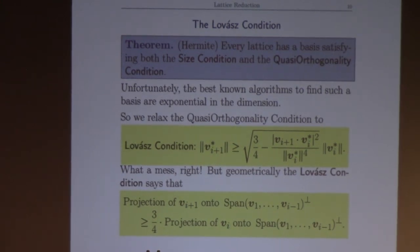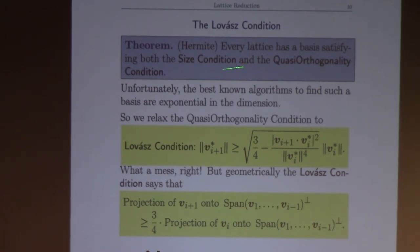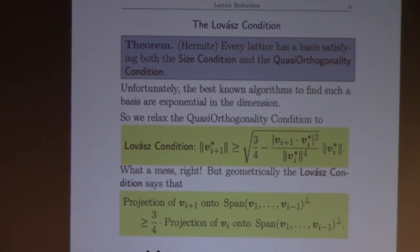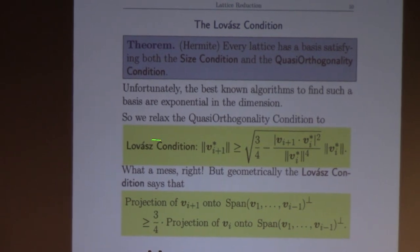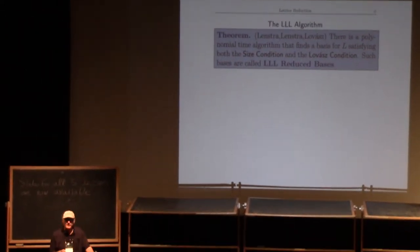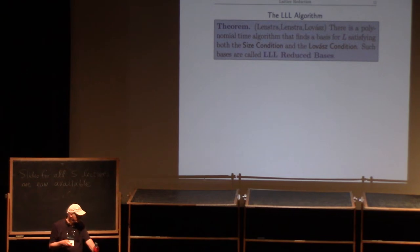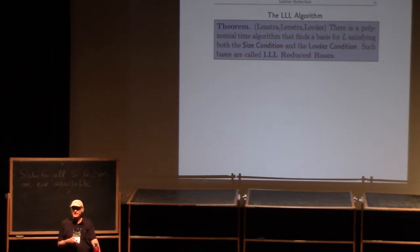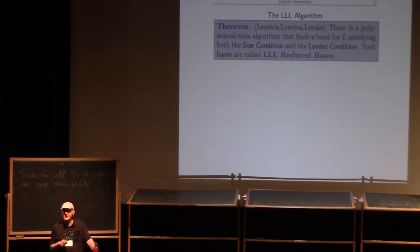Since Hermite says we can find a basis satisfying the size and quasi-orthogonality condition, and quasi-orthogonality is stronger than the Lovász condition, there certainly exists a basis satisfying the size condition and the Lovász condition. The amazing thing is we can find that basis in polynomial time. This is the algorithm Lenstra and Lovász published in 1982 — a polynomial time algorithm, quadratic in the dimension, usually called an LLL-reduced basis or L³-reduced basis.